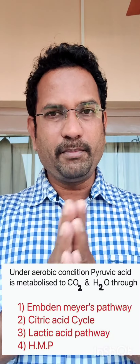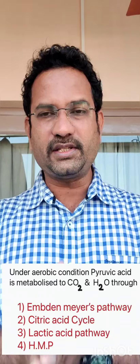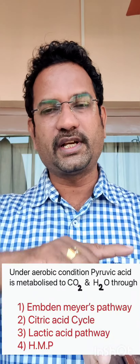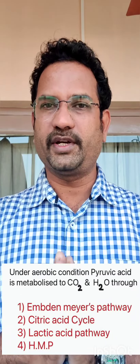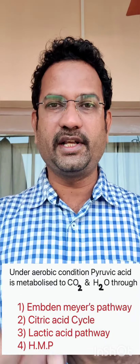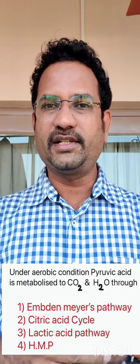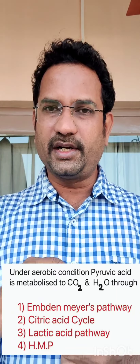So this is about the options. Now understand each pathway clearly. The Embden-Meyerhof pathway is glycolysis, in which glucose is converted to pyruvate — glucose undergoes breakdown and gives pyruvate. This occurs under anaerobic conditions and does not need oxygen. Now the citric acid cycle: under aerobic conditions, pyruvate is converted to Acetyl-CoA, which enters the citric acid cycle and is completely converted to carbon dioxide and water — complete oxidation of glucose in the presence of oxygen. This is known as the citric acid cycle.